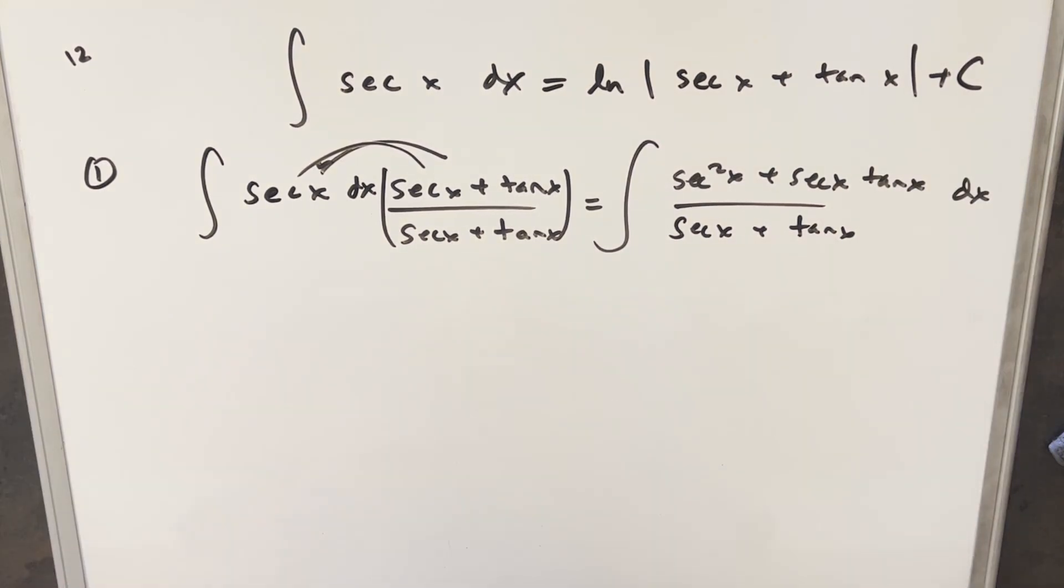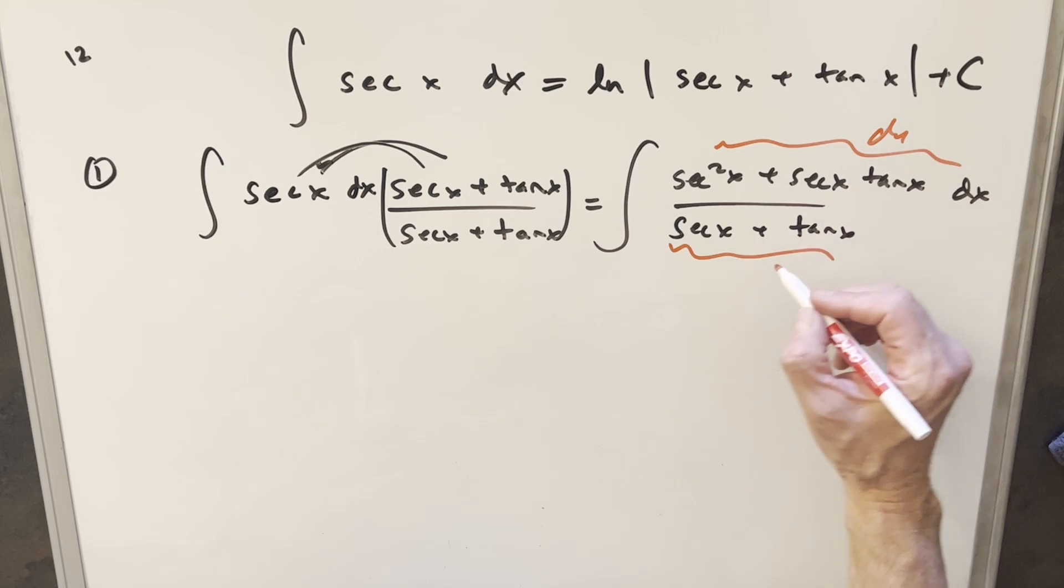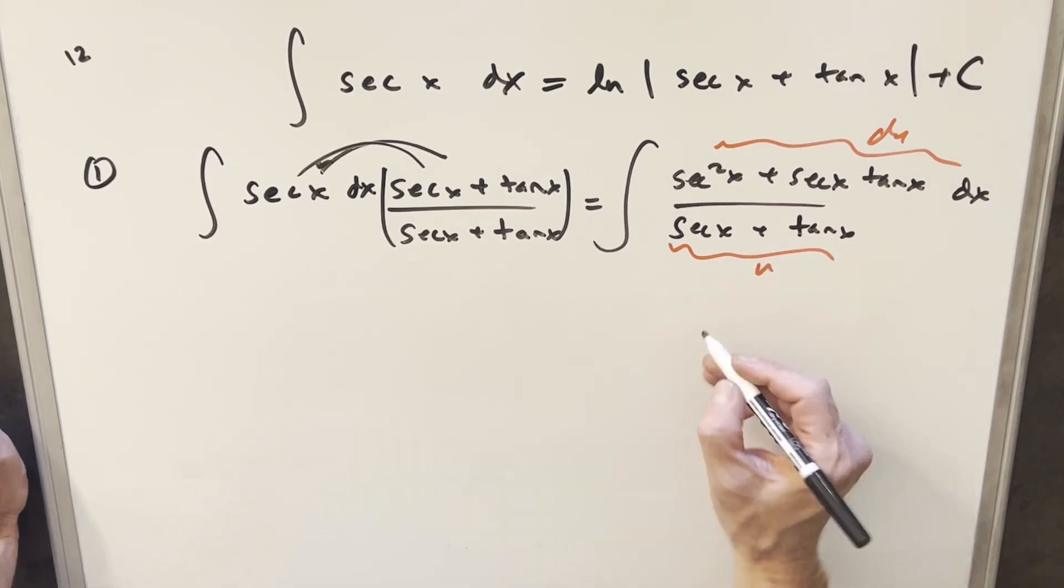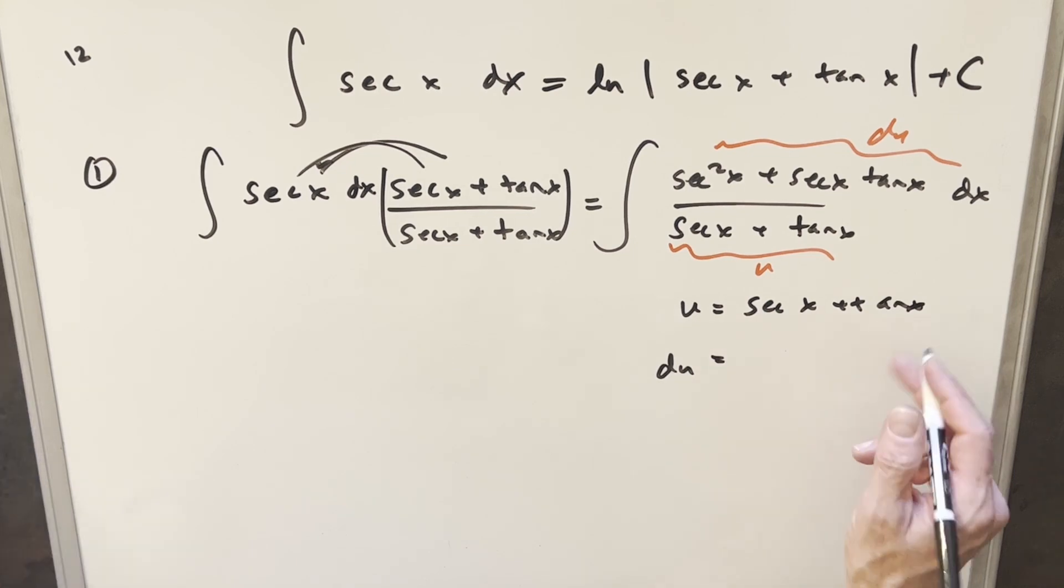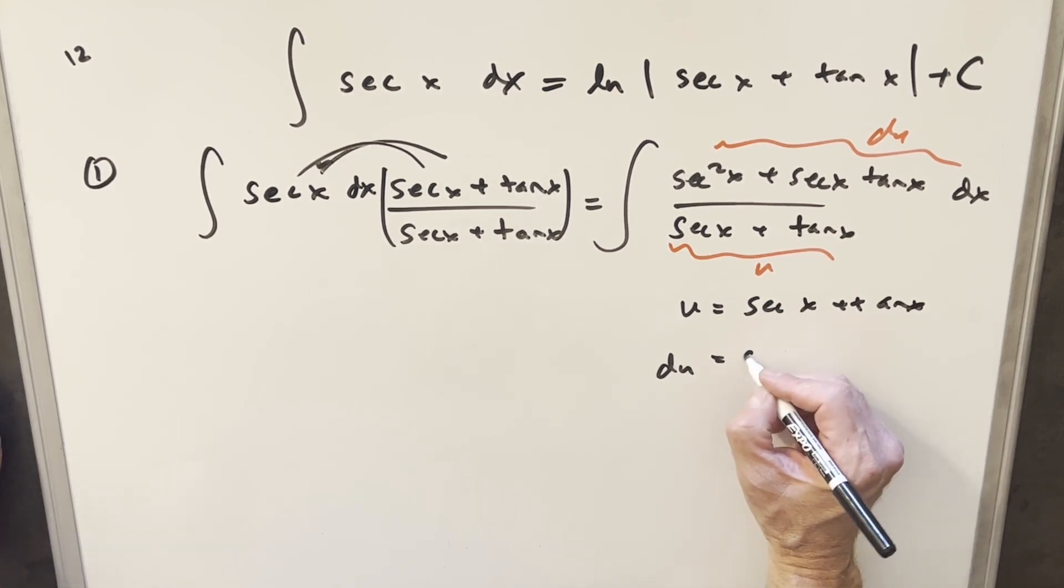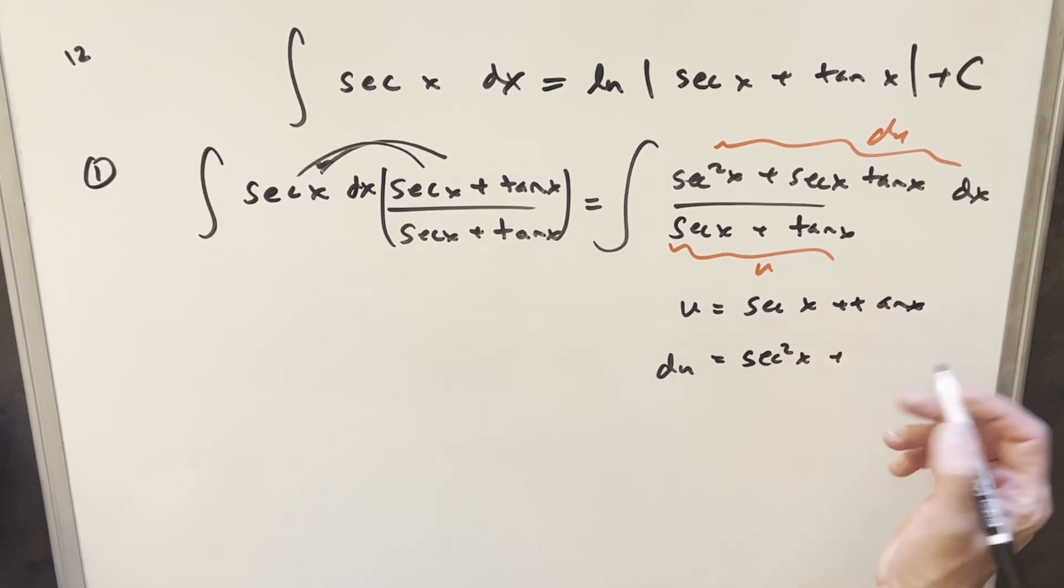And the reason this works so nice is because it's perfectly set up for a u substitution. If we take our denominator to be our u, then we have exactly our du here in the numerator. So let's just do this. I'll make my u this denominator, and when I integrate tan x that's gonna give me secant squared x, and when I integrate secant x that's gonna give me secant x tan x dx.